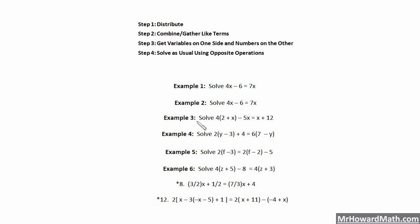Examples 1 and 2 are pretty straightforward. 3 and 4 we add in distribution. Examples 5 and 6 are going to be our special cases of either infinite or all real solutions, or no solution. Example 8 just has a lot of fractions — I'm going to show you how to use your calculator to simplify that and let it do the heavy lifting. And number 12 just has multiple sets of distribution on one side. I'll show you how to break that down step by step.